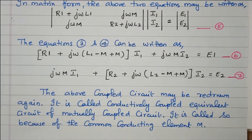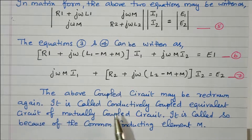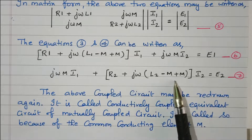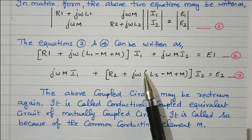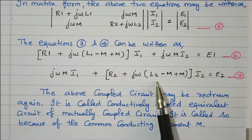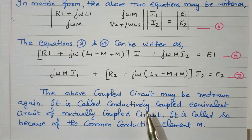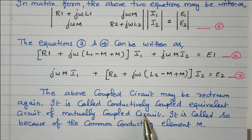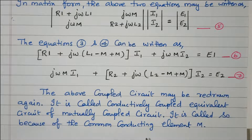The above coupled circuit may be redrawn. It is called the conductively coupled equivalent circuit of a mutually coupled circuit. It is called so because of the common conducting element M, which is available commonly between circuit 1 and circuit 2. Earlier the circuits were only magnetically coupled; now in the redrawn form they share a common element M.